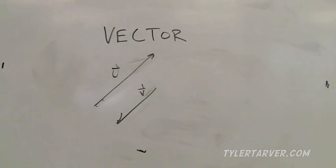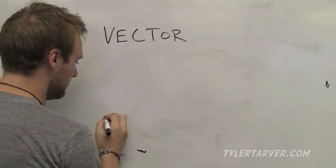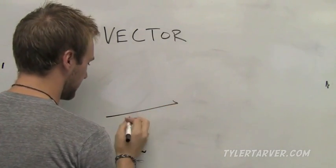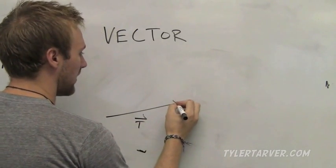Now there's two methods your book gives on how to add the vectors. There's the head to tail method. That means let's say this vector goes here and that's vector t.